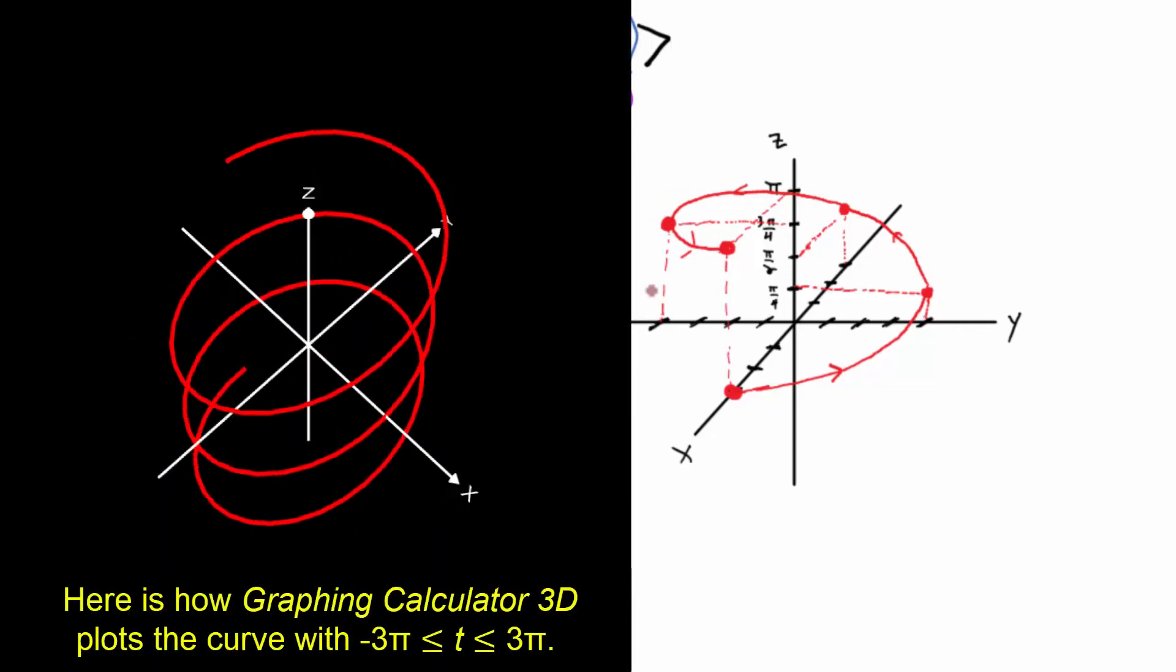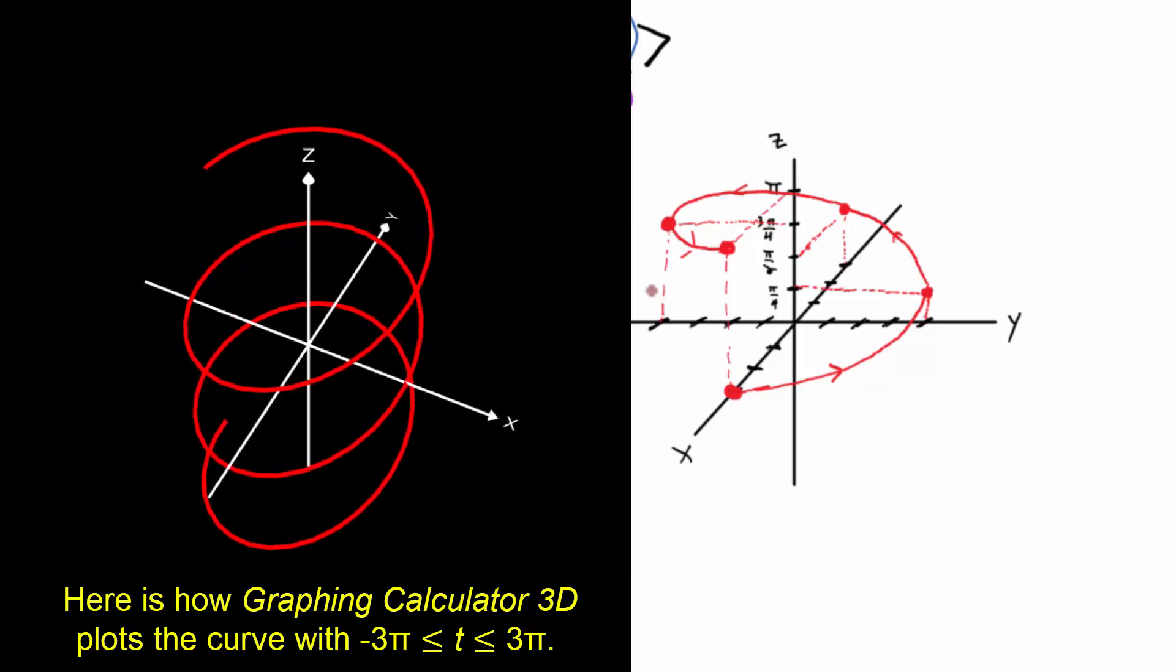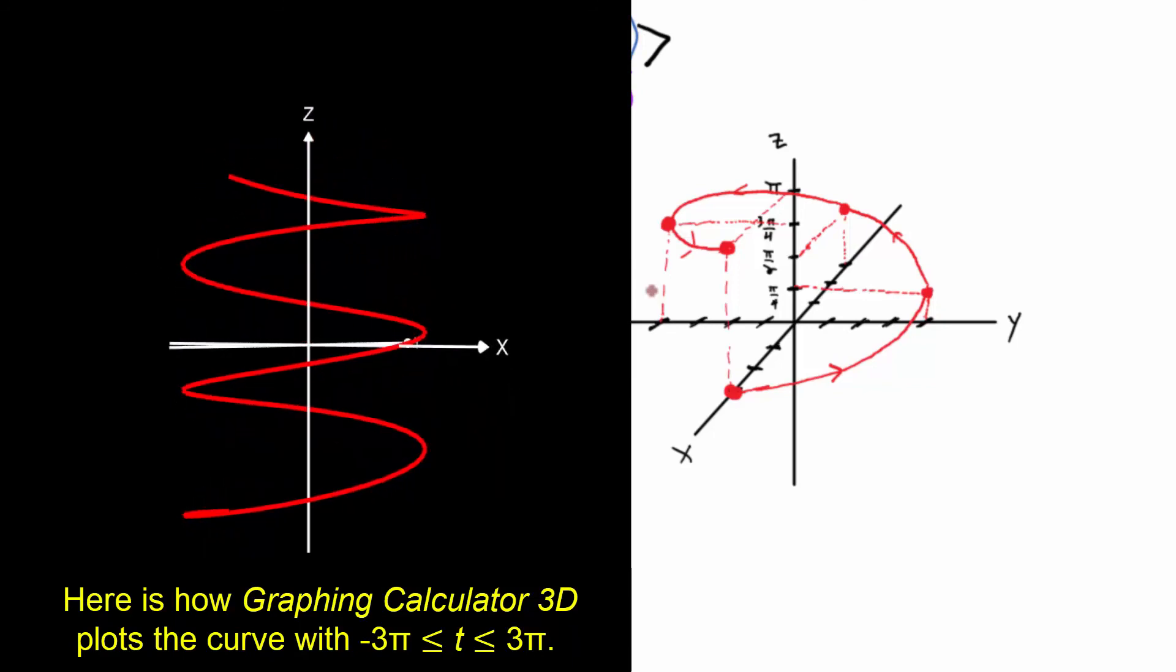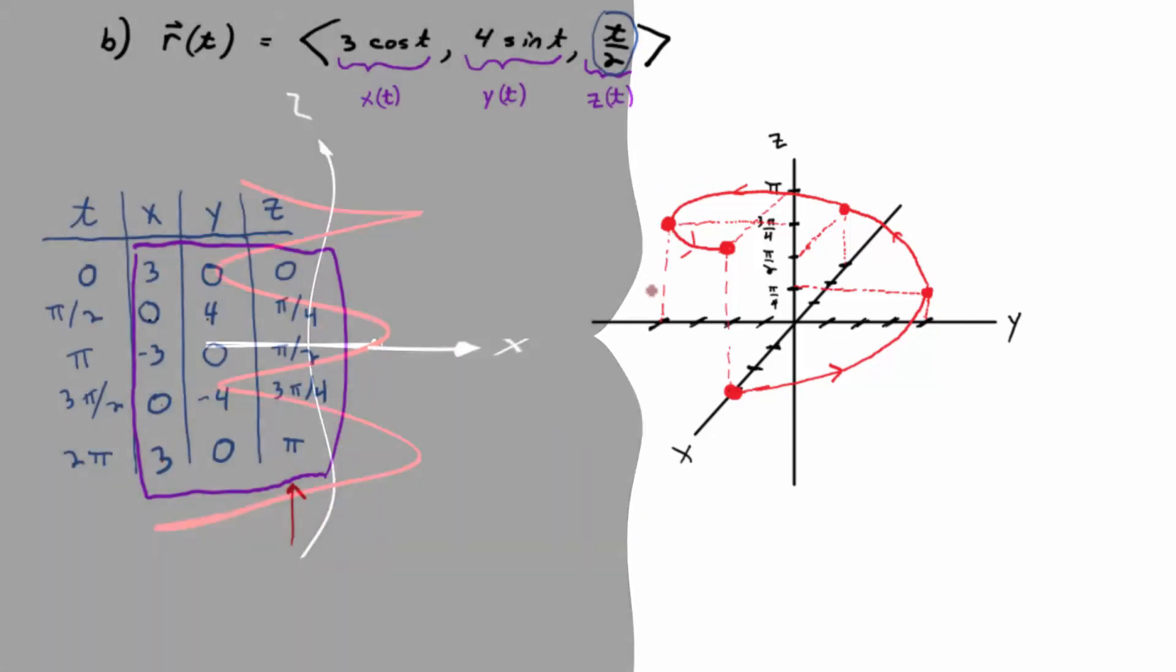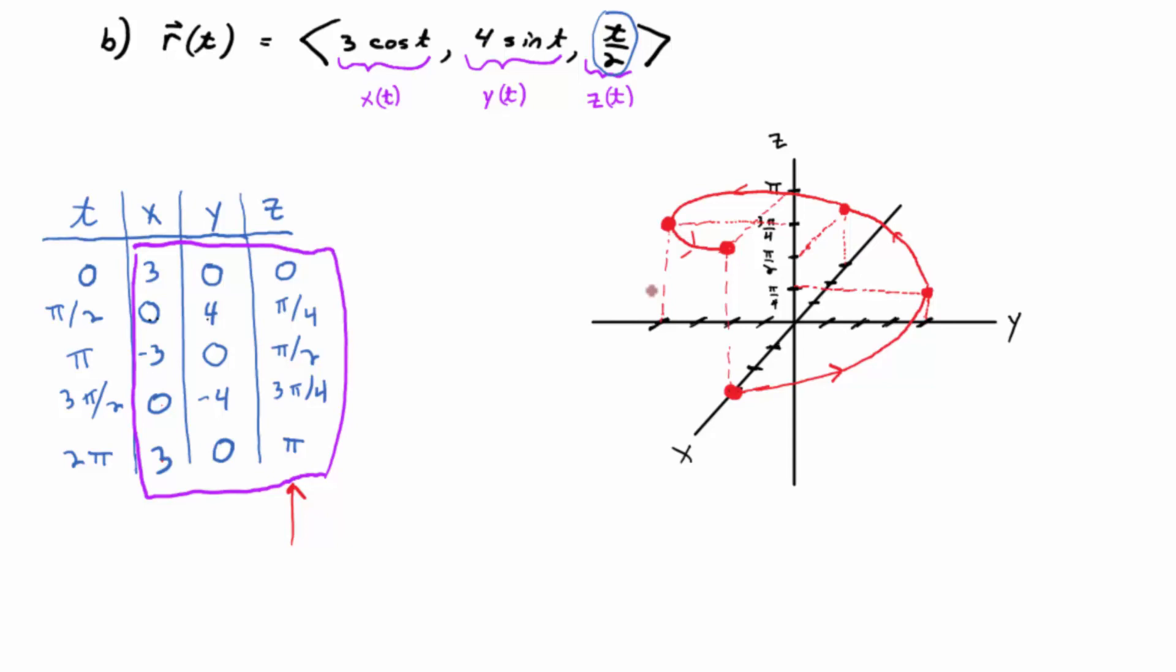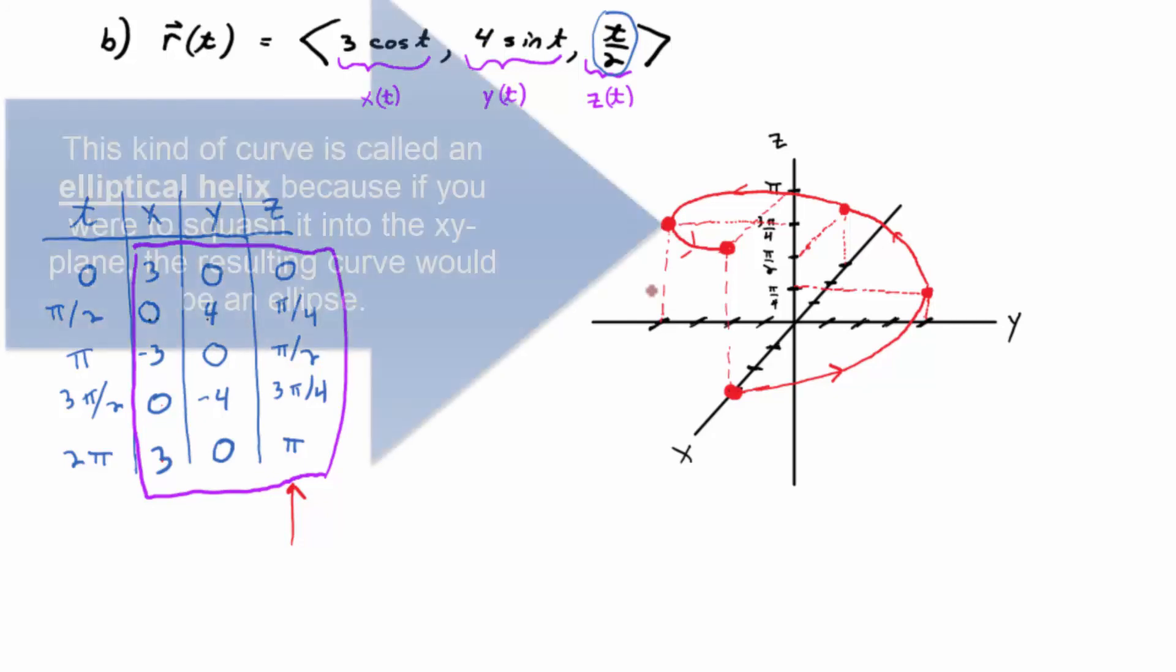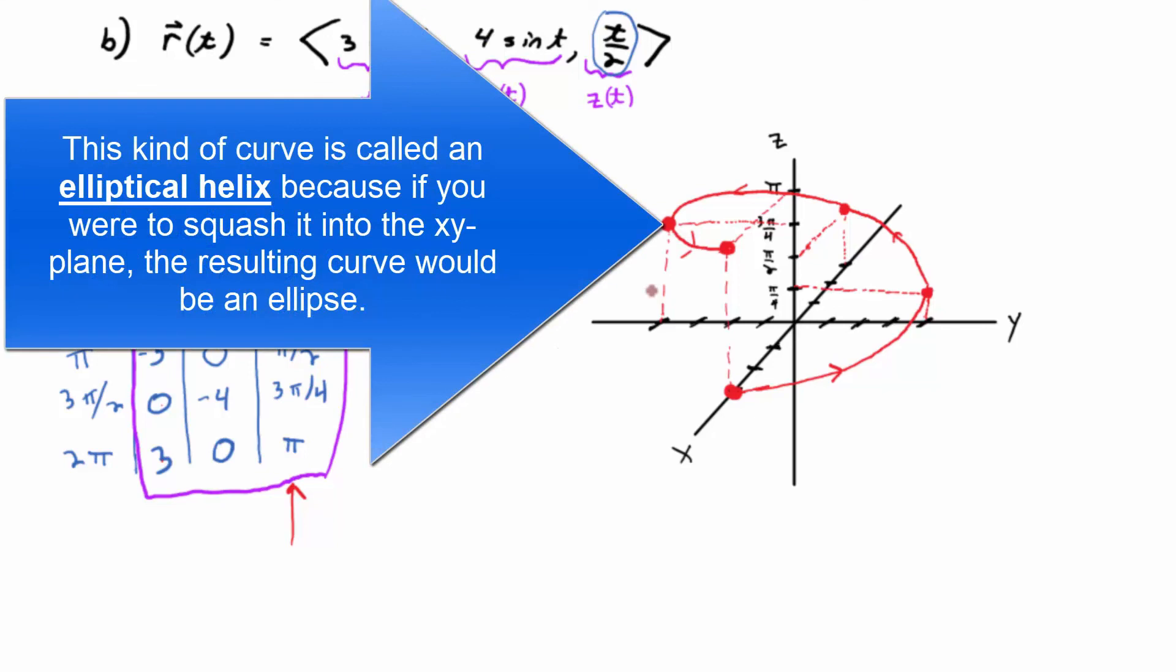So, any questions on that procedure? You're not going to have to graph too many curves in space. Maybe a line in space, connect two points, that sort of thing. And then a relatively simple curve like this. Any questions on that? It's actually called a helix. It's an elliptical helix.